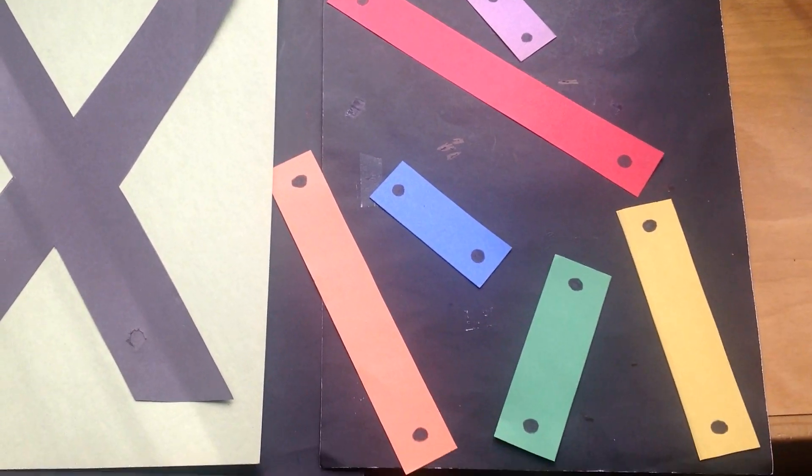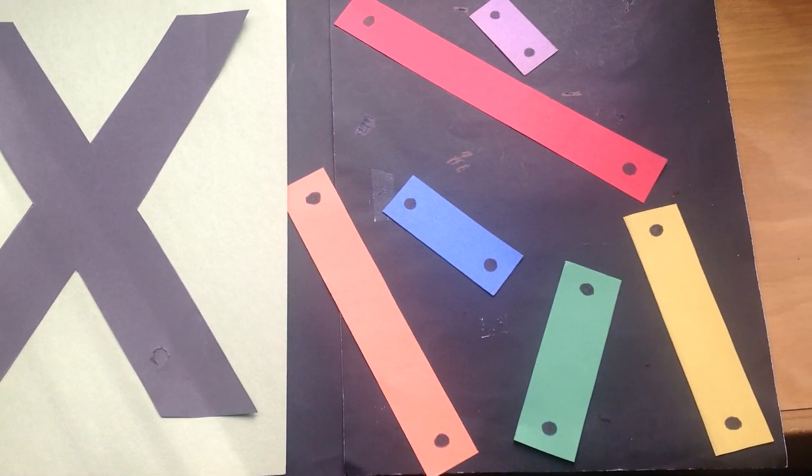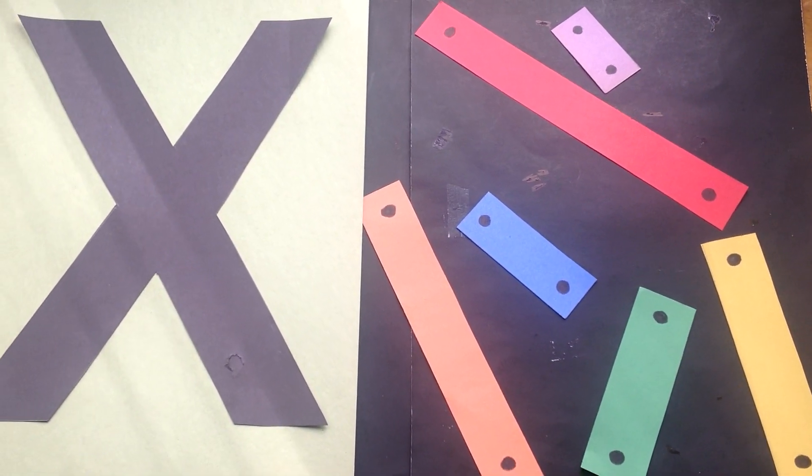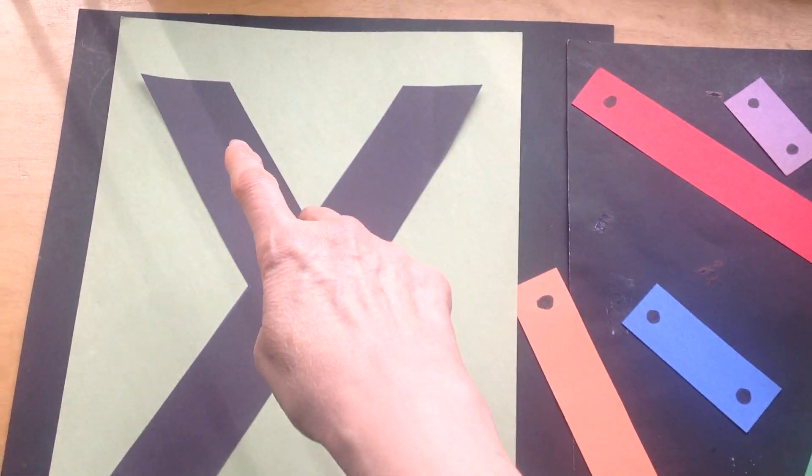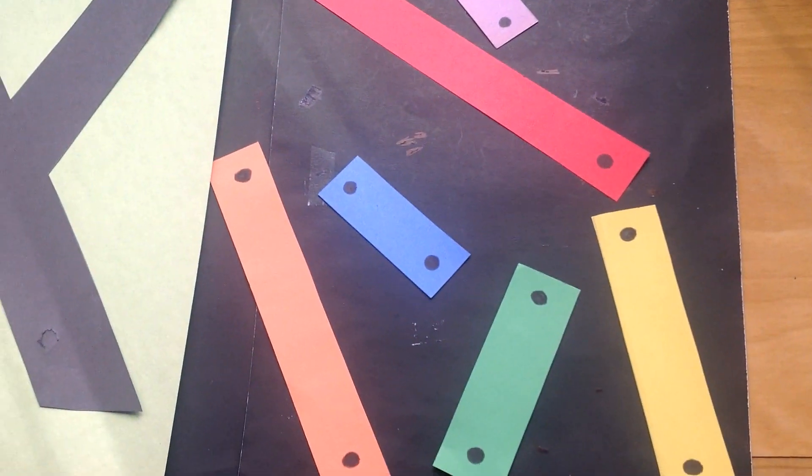Alright, we're going to practice our colors in Spanish too. So we can try the colors in English and in Spanish. So here's our letter X for xylophone and here are all the chimes.